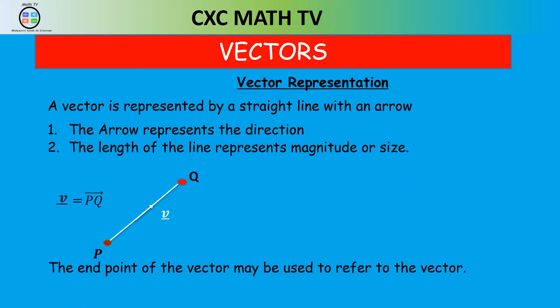The endpoint of the vector is how we refer to the vector. We can put another line on the screen where the arrow is going downwards from point P to Q — that vector we can call U, and U would be equal to vector PQ. The key takeaway is that the vector direction is important in naming the vector. We always go from the starting position to the ending position — that's how we name the vector.